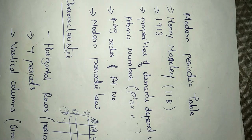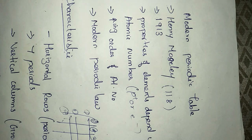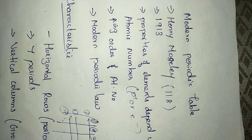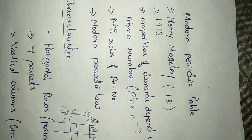The next scientist, Mendeleev, in 1869 classified the elements according to atomic mass. He arranged all elements into groups and periods, but his classification also contained a lot of demerits. These limitations were overcome by the next scientist, Henry Moseley.